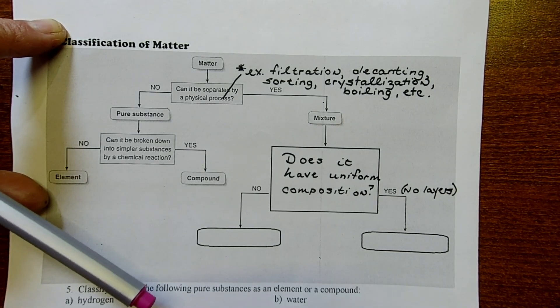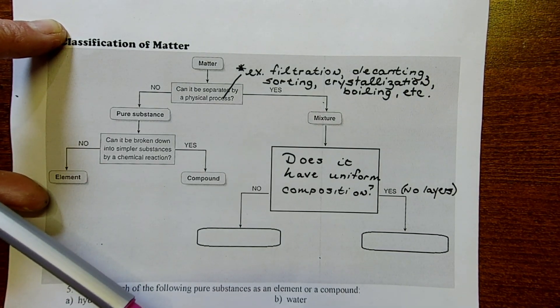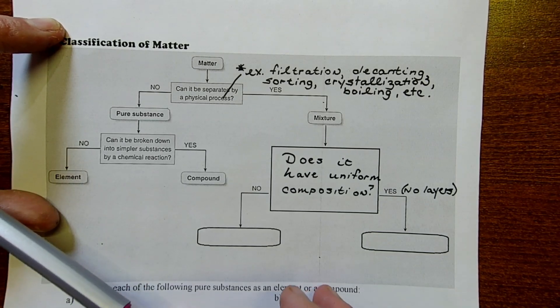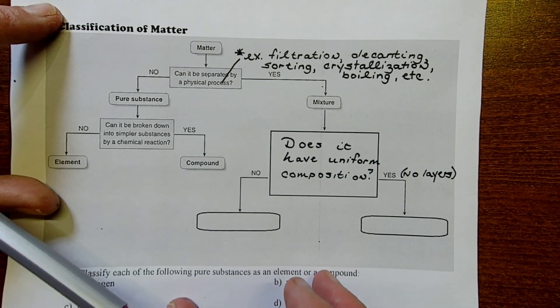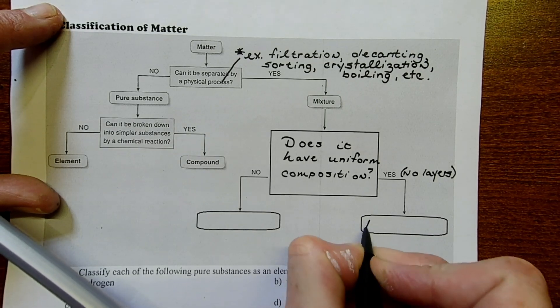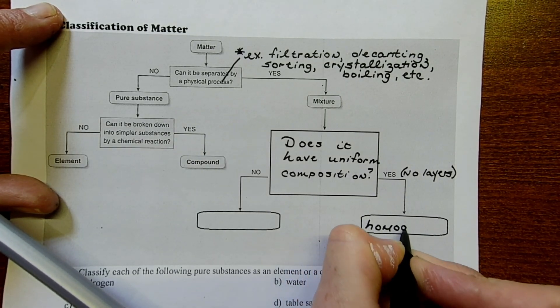There's no difference from the bottom to the top. It's indistinguishable. If it has uniform composition like that, then we can classify it as homogeneous. So it's going to be a homogeneous mixture.